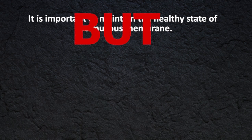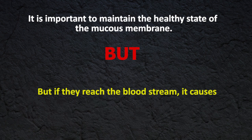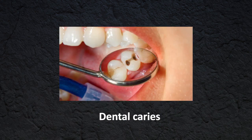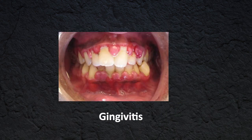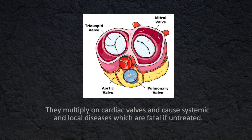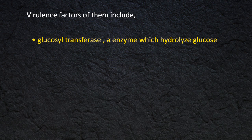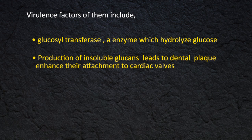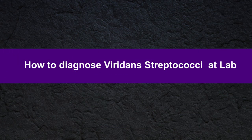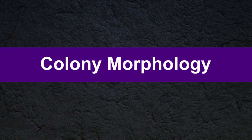If they enter the bloodstream, viridans streptococci cause endocarditis, especially after invasive dental procedures. They also cause dental caries, gingivitis, and periodontal diseases. They multiply on cardiac valves and cause systemic and local diseases, which are fatal if untreated. Virulence factors include glucosyltransferase, an enzyme which hydrolyzes glucose. Production of insoluble glycans leads to dental vacuoles and enhances their attachment to cardiac valves.